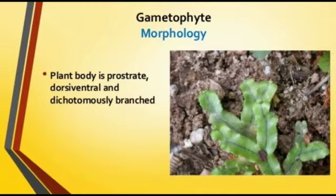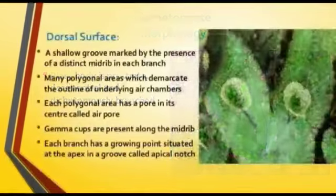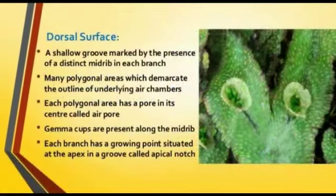On the dorsal surface, there is a shallow groove marked by a distinct midrib in each branch — one midrib region per branch. There are many polygonal areas which outline the underlying air chambers. Each polygonal area has a pore in its center called an air pore.